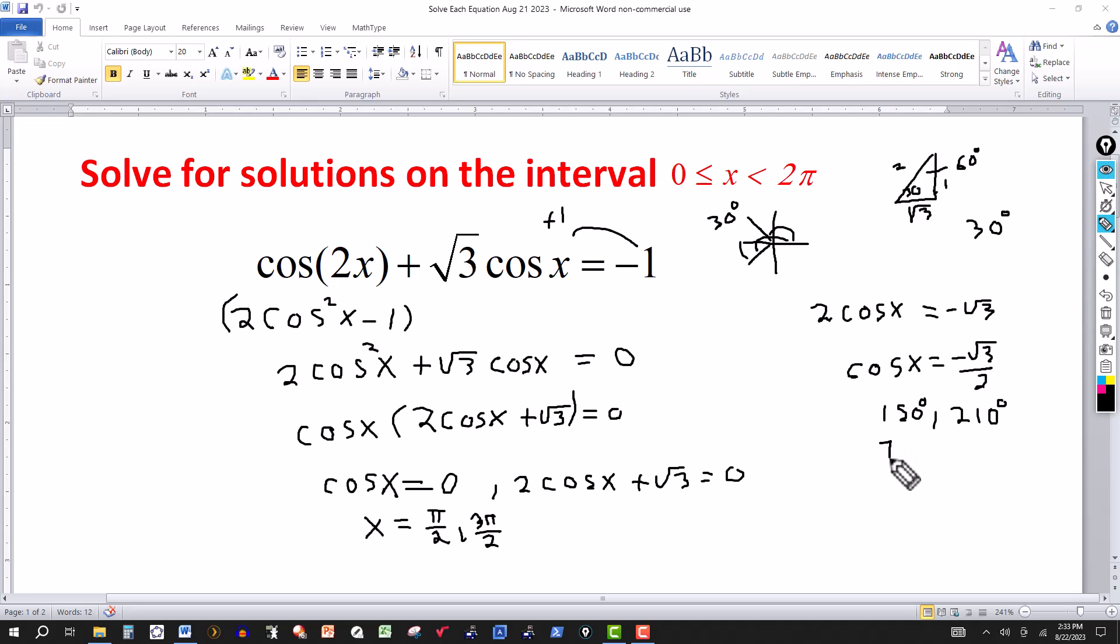So while editing the video, I got a bunch of static, so I had to delete the sound from this portion of the video. So I'm doing a voiceover here. So all I'm doing here are the two solutions from this equation over here, 150 and 210. You can multiply those by pi over 180 to get them in radians here.